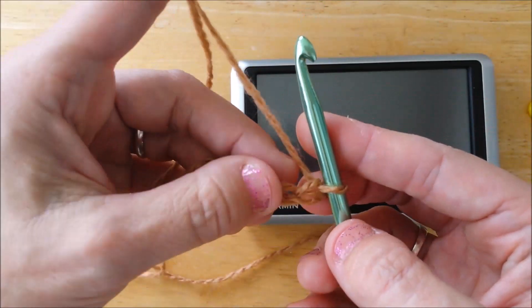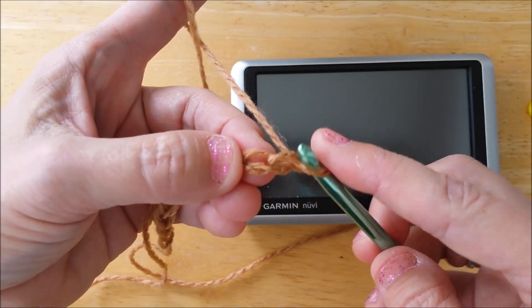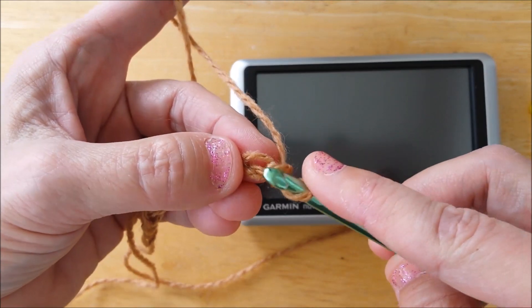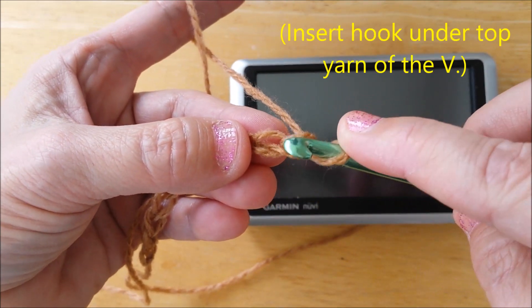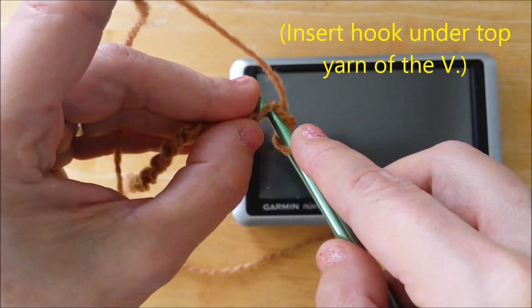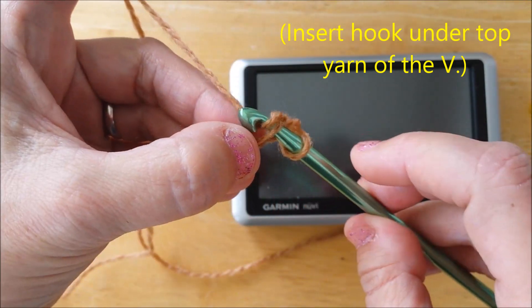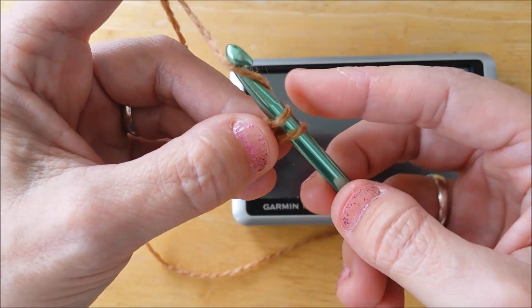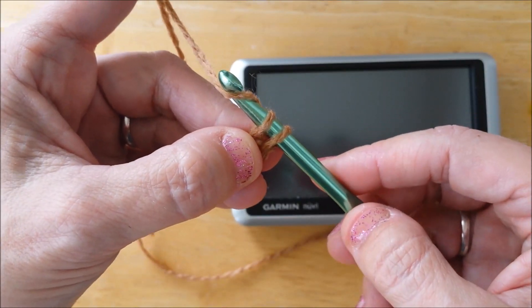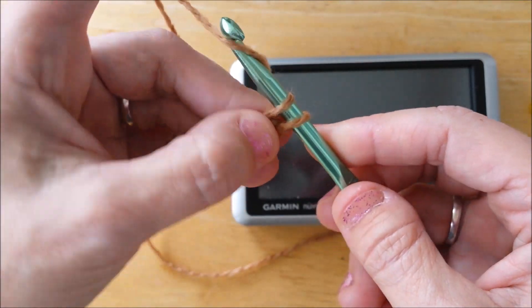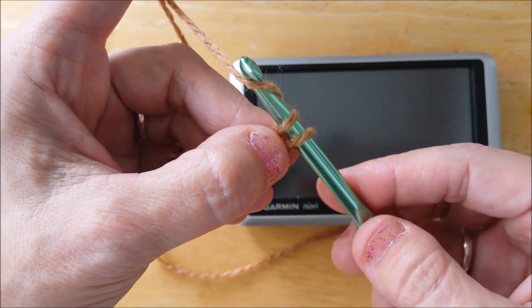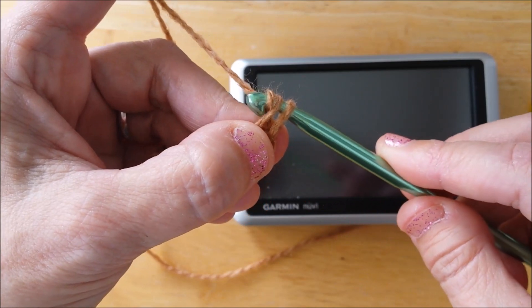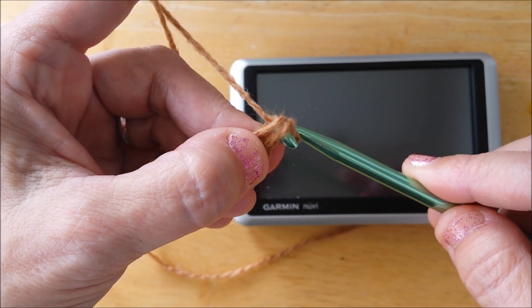We're going to do a bunch of single crochets. Now this was our height stitch so I'm going to skip it. So in the second one, insert your hook in the top V, yarn over, pull through, yarn over, pull through your remaining two stitches and we'll have our first single crochet. And remember, so it glides easier, turn your hook down toward your work so it comes through nice and easy.